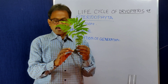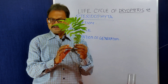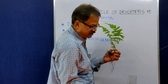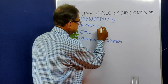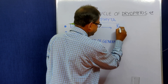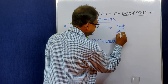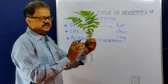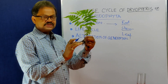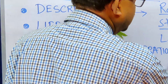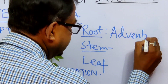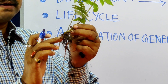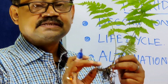Dryopteris has a root system, stem, and leaf. The roots are adventitious. The stem is present here and it is rhizomatous — the stem is a rhizome.